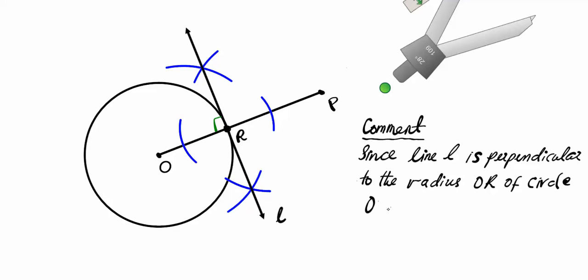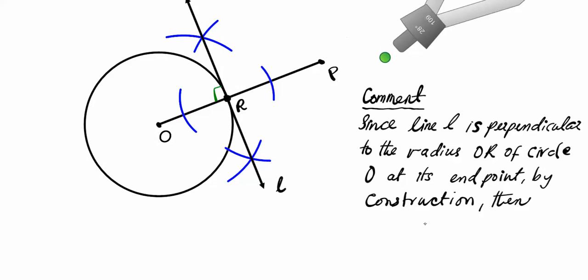At its endpoint by construction, then we can conclude that line L is tangent to circle O at R.